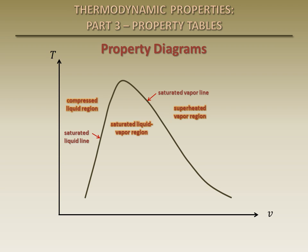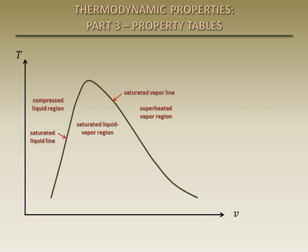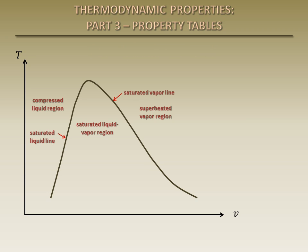There are separate tables for each of the three regions shown here. We will learn how to determine what state or region a substance is in and how to look up the properties in the tables. To demonstrate the use of the property tables, we will use water as our substance throughout this presentation. Similar property tables can be found for many pure substances and are used in the same manner.